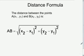This video is going to go over the distance formula. The distance between the points A and B, with A being (x₁, y₁) and B being (x₂, y₂), is the square root of the quantity (x₂ minus x₁) squared plus the quantity (y₂ minus y₁) squared.